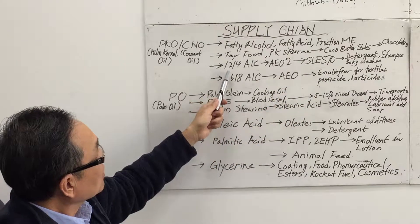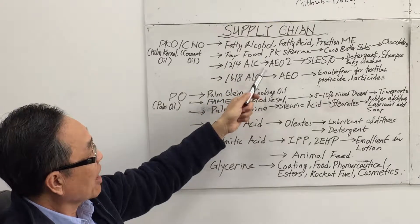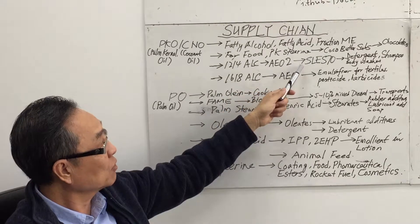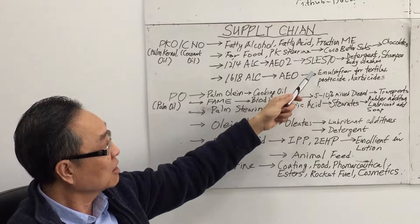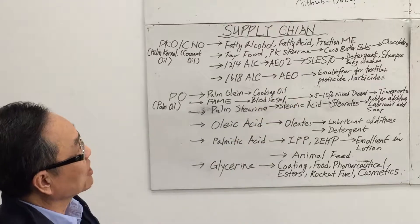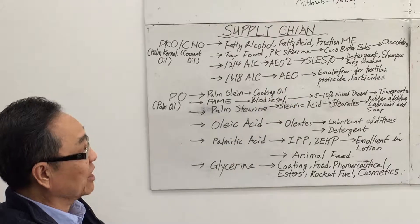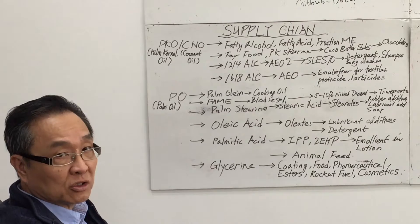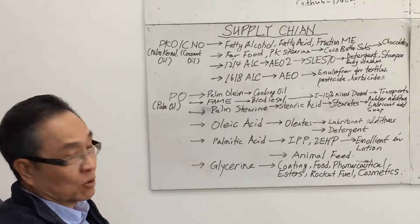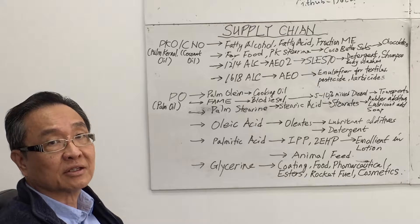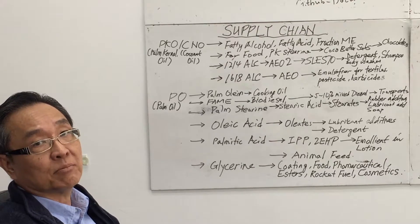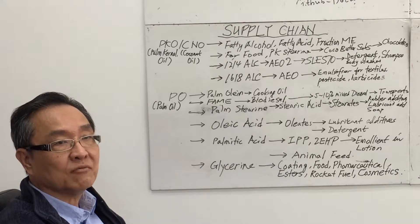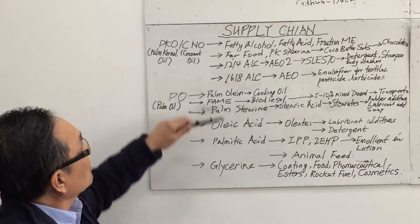For the C12-14 alcohol, it is used for making fatty alcohol ethoxylate 2 moles. The fatty alcohol ethoxylate is further used for making SLES 70 — sodium lauryl ether sulfate 70% 2EO — used a lot in the detergent, shampoo, and body wash industry, competing with linear alkyl benzene sulfonic acid, which is mainly derived from linear alkyl benzene from crude oil.